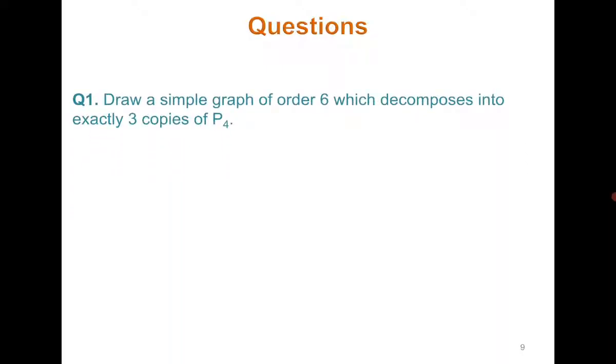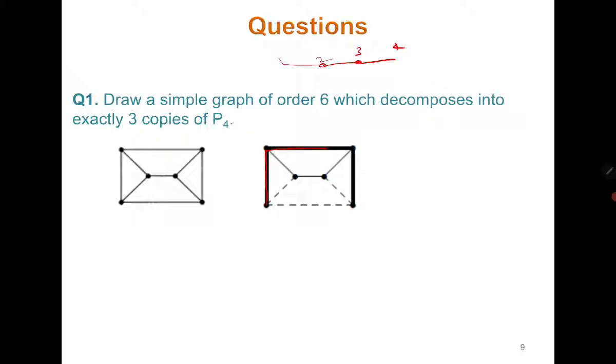Let us see one more question. Draw a simple graph of order 6 which decomposes into exactly 3 copies of P4. First recall P4. So this is P4 with 4 vertices. It means that you need to find a graph of order 6 and size 9 such that the graph is made up of union of 3 P4, exactly 3 P4. Please do try it by yourself. I am showing you one of the answers. So this is the graph because here you can see that it decomposes into 3 P4. One with these bold lines, then the second one with the dotted lines and this is the last one.